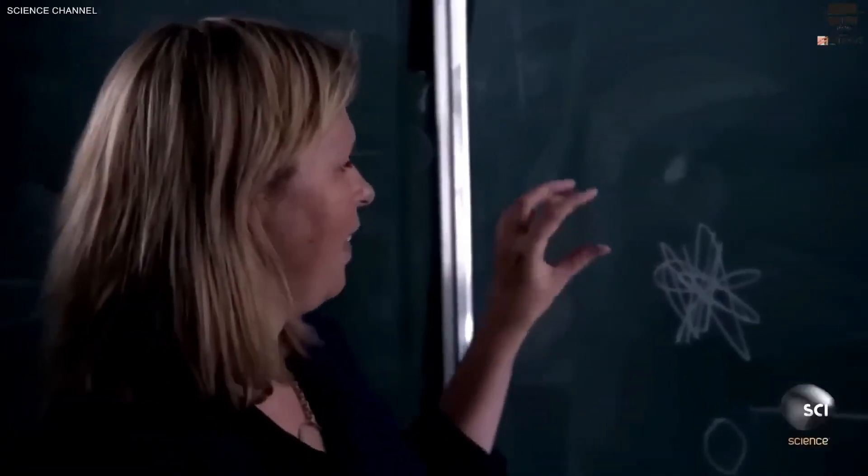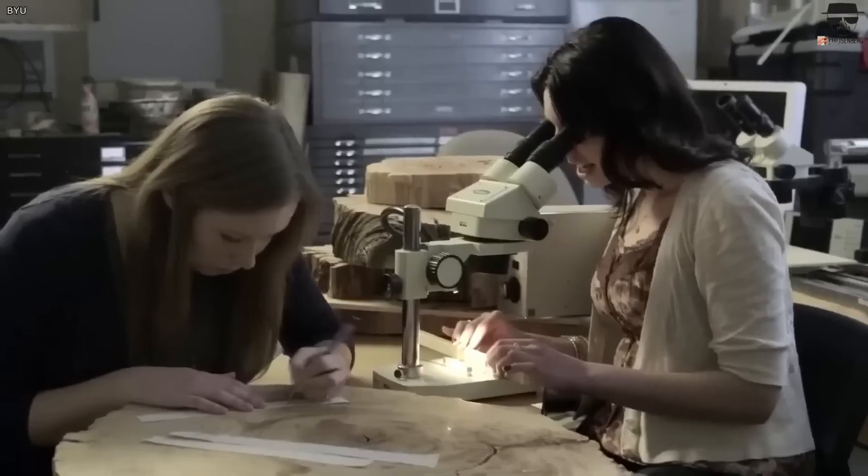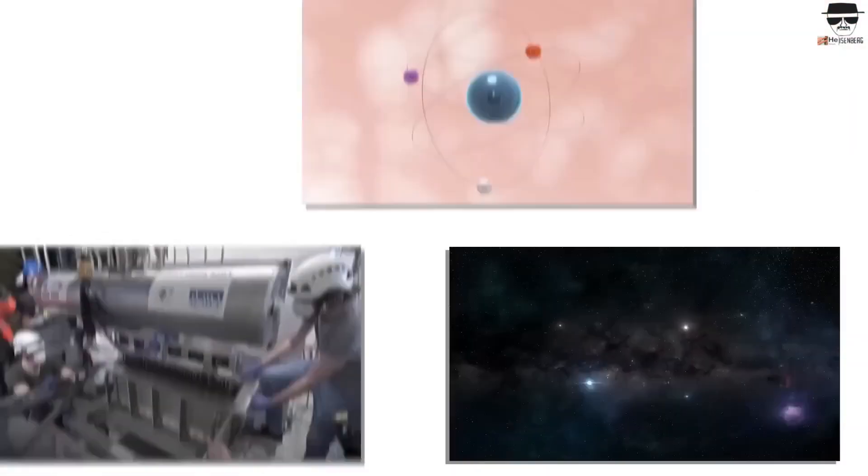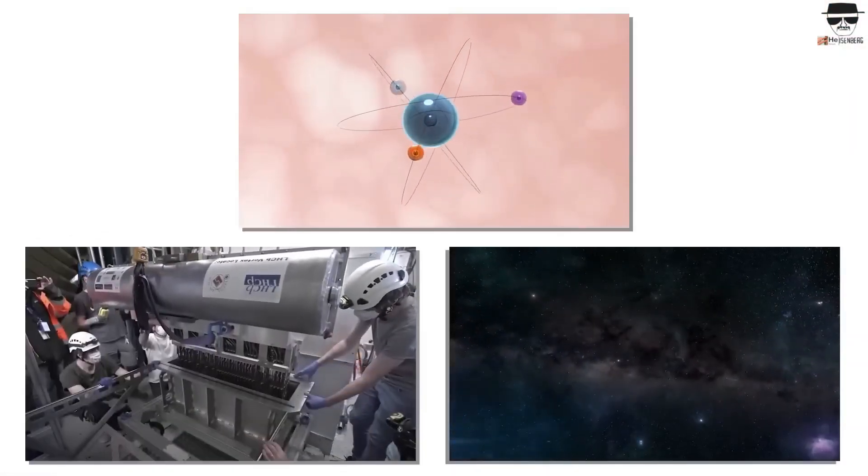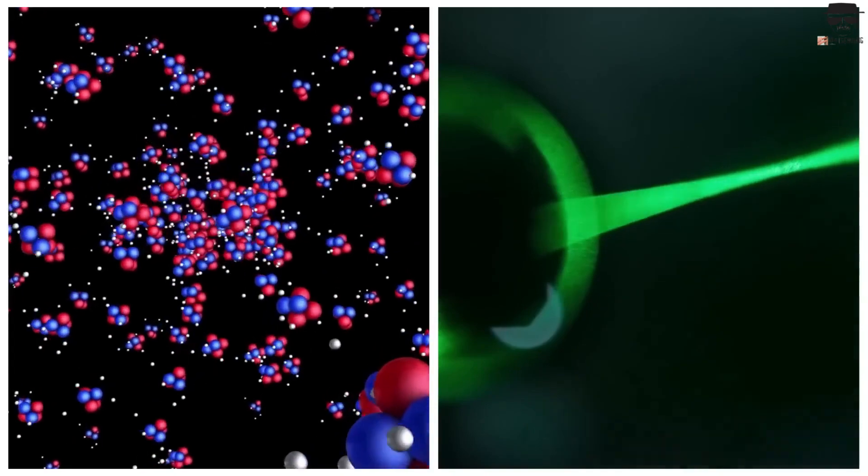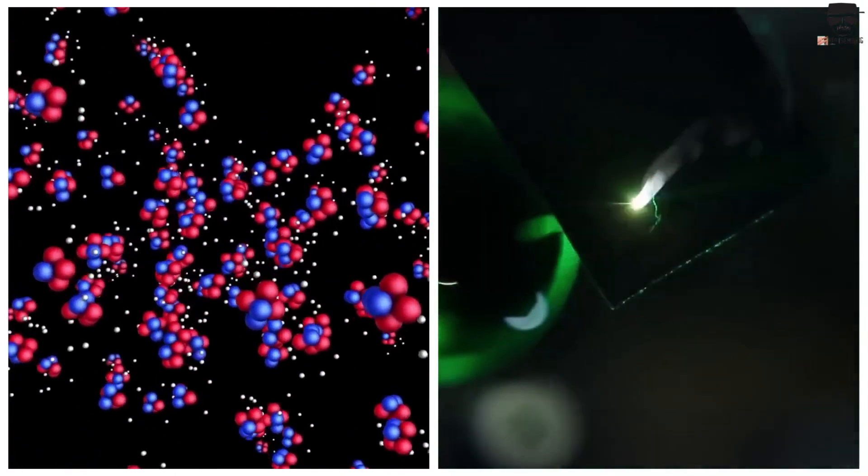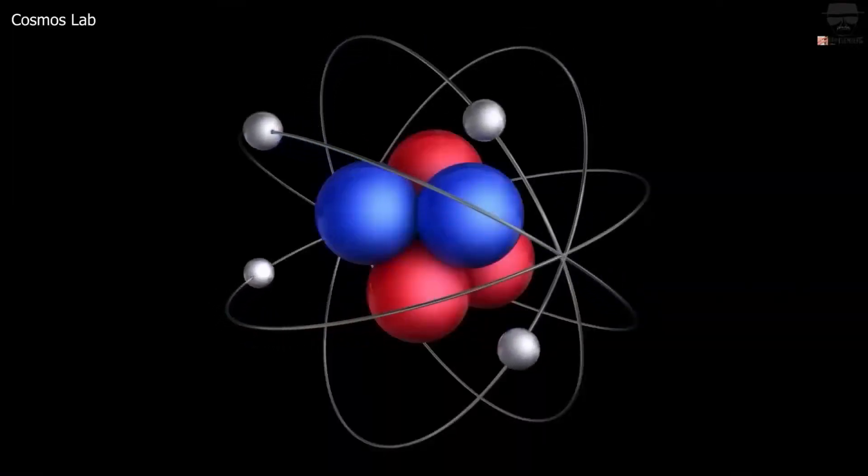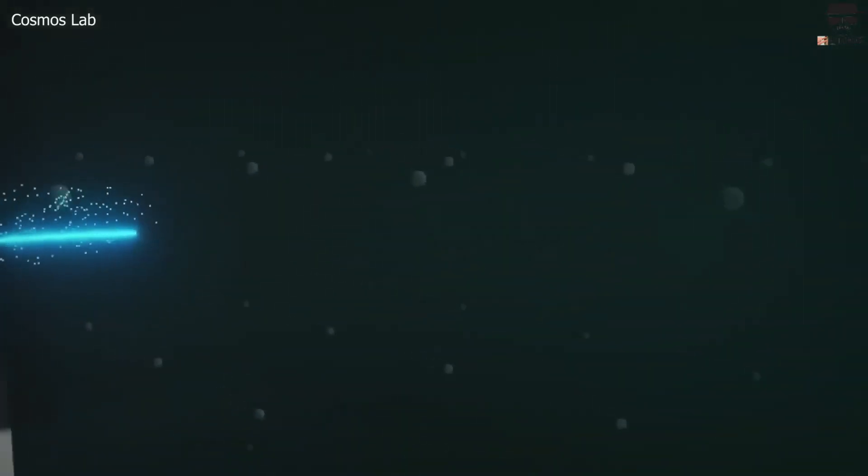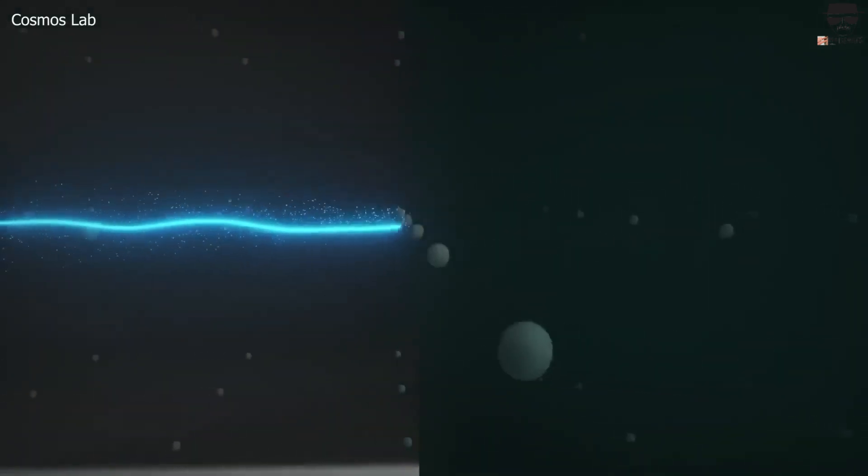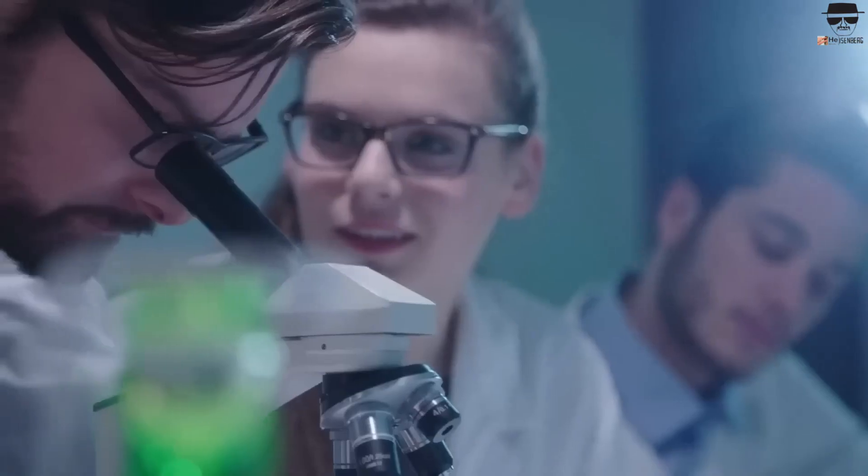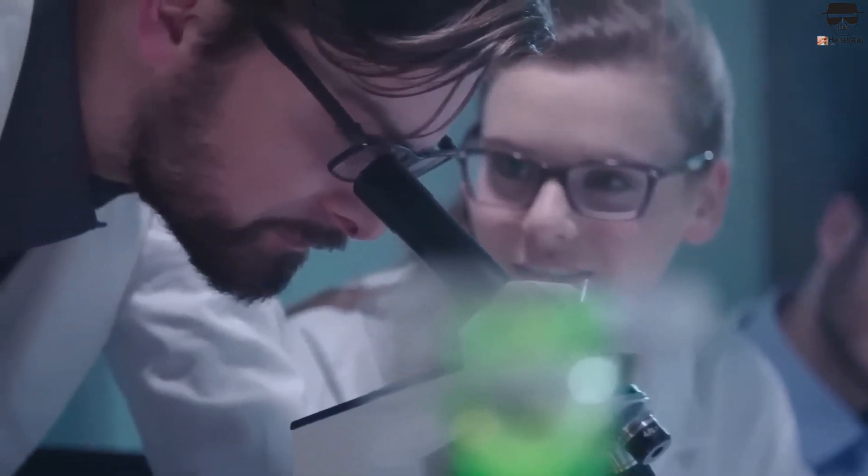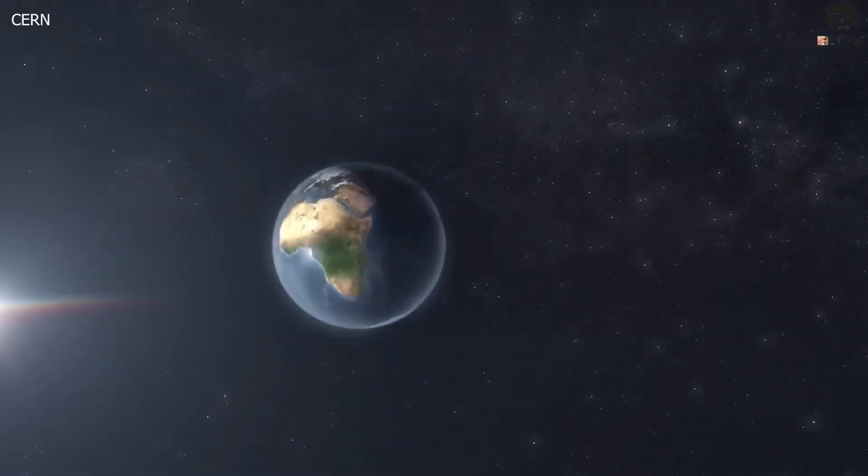According to the Higgs field theory, the Higgs boson is responsible for giving particles mass. It is believed that the Higgs field is a field of energy that permeates all of space and when particles pass through it, they acquire mass. The Higgs boson is thought to be a mediator of the Higgs field, acting as a bridge between the field and the particles it interacts with. The discovery of the Higgs boson provides experimental validation for the Higgs field theory and helps explain why some particles have mass and others don't.